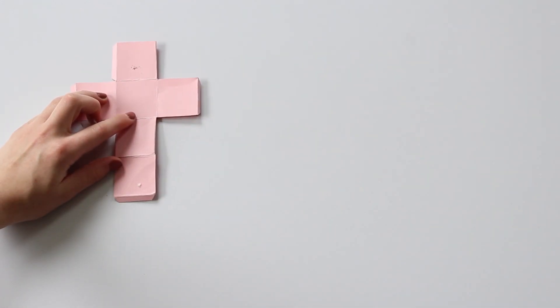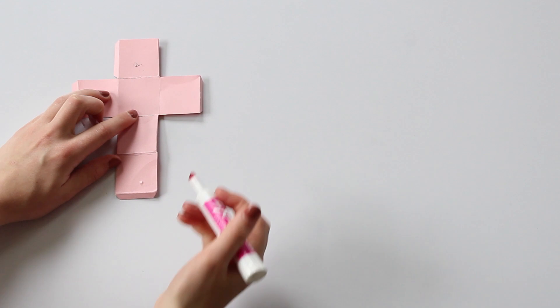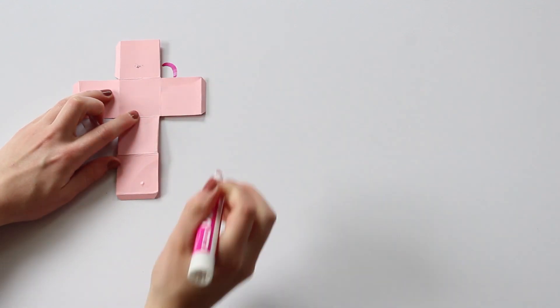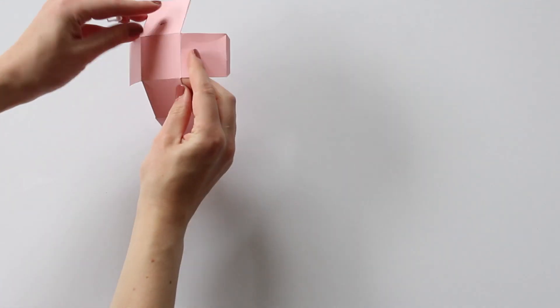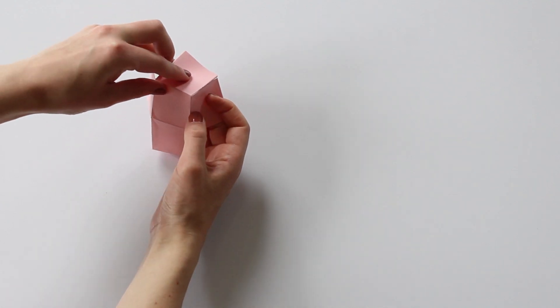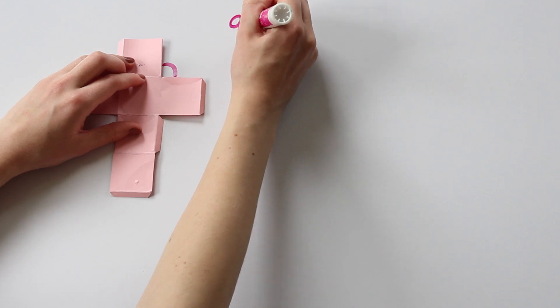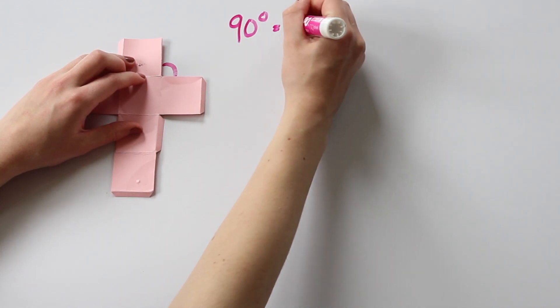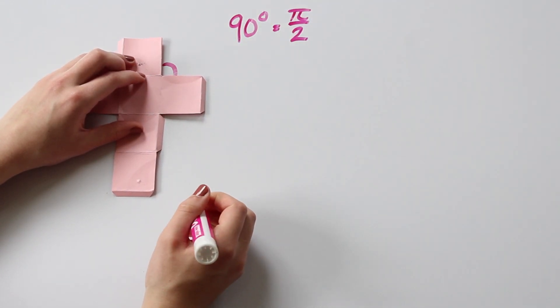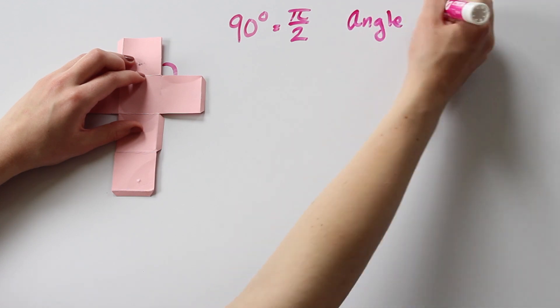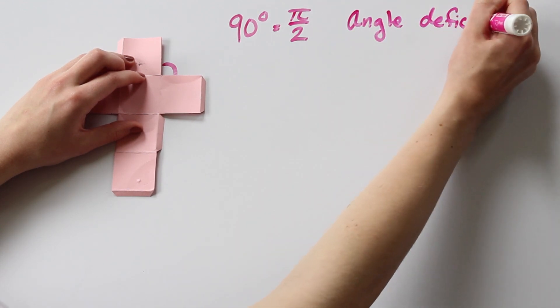So here we have what's called the net of the cube. We want to focus on this angle right here. See that the three squares around this vertex fold up to meet each other? So there is this 90 degree angle missing to have the cube lie flat at the vertex. This is called the angle deficiency at this vertex.